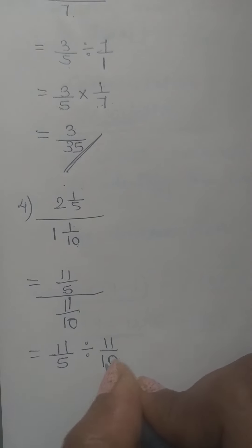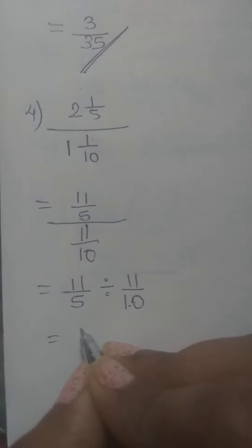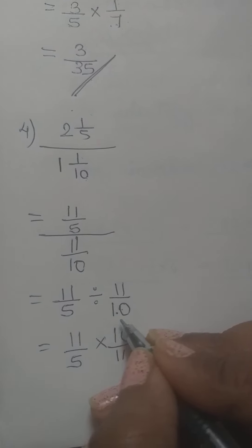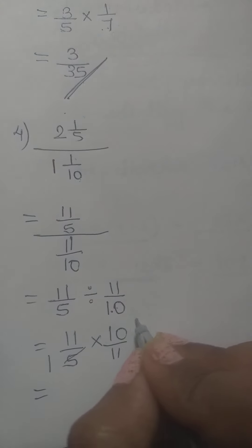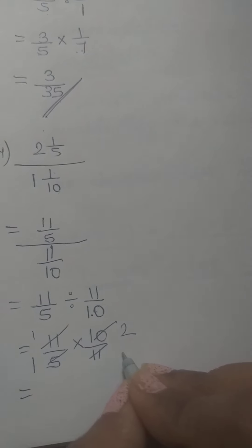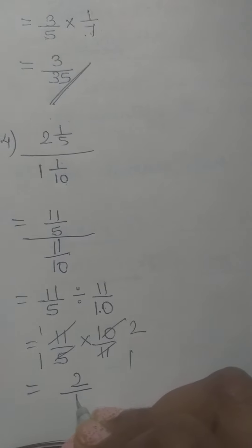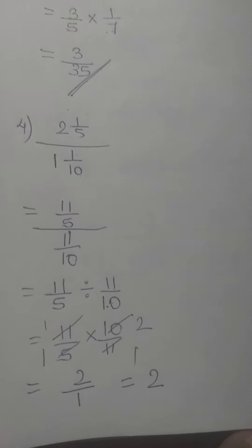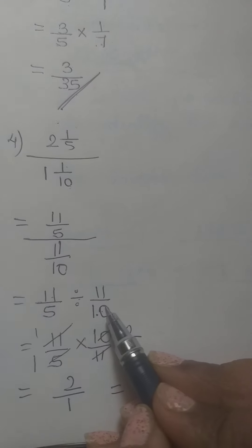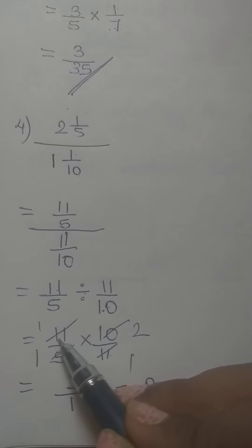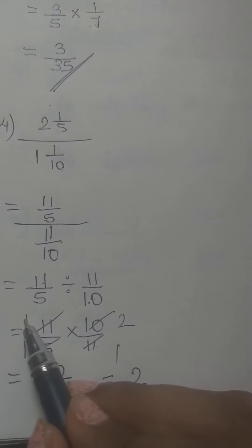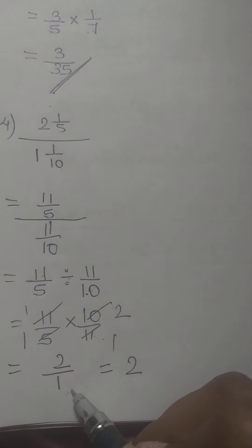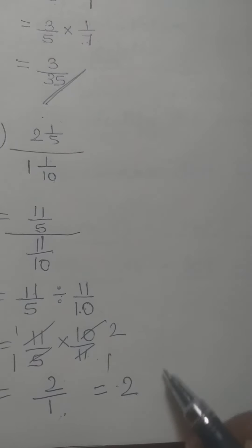In division, we use the multiplicative inverse of the second fraction. So we write 11 by 5 multiplied by 10 by 11. Now do cancellations: 11 and 11 cancel, 5 and 10 cancel leaving 2. In the numerator only 2 remains, in the denominator only 1 remains. Whenever denominator is 1, the answer is just that number. So the answer is 2.